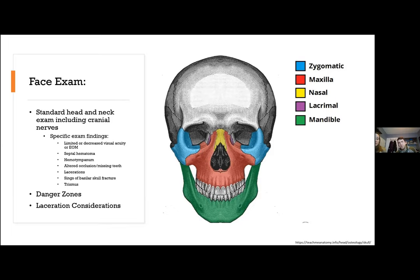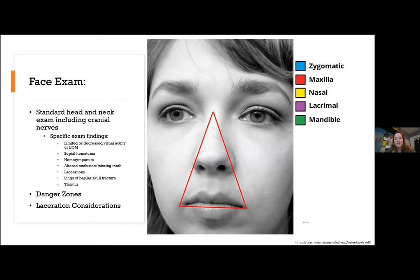The danger triangle of the face — the area between the corners of the mouth and the bridge of the nose including the nose and maxilla — is important for infection. Venous drainage in this area communicates with the brain via the superior and inferior ophthalmic veins, which empty into the cavernous sinus, potentially allowing facial infections to spread to the brain, causing meningitis, intracranial abscess, seizure, coma, or death. Facial nerve danger zones should be considered in any laceration — particularly lateral to the lateral canthus, where there is less arborization and facial nerve injury can cause significant paralysis.